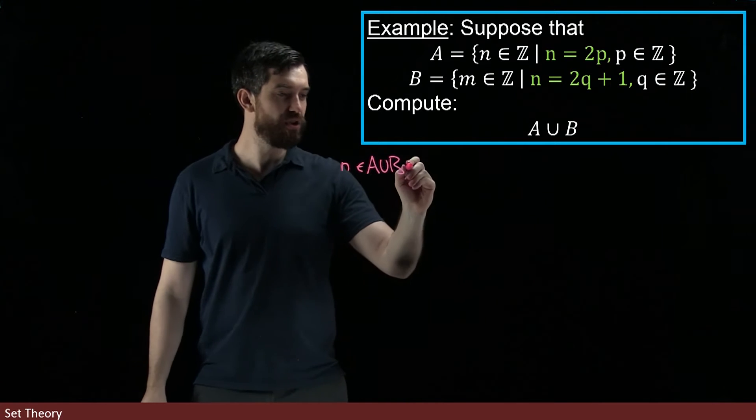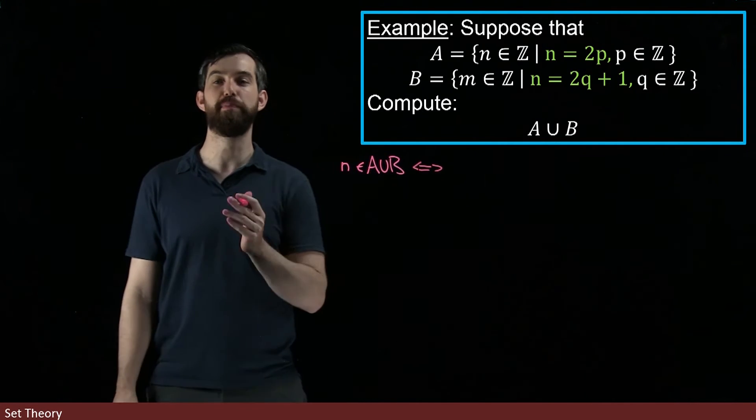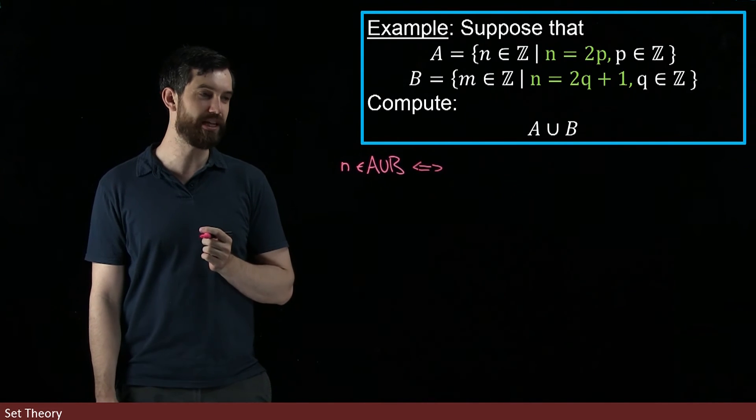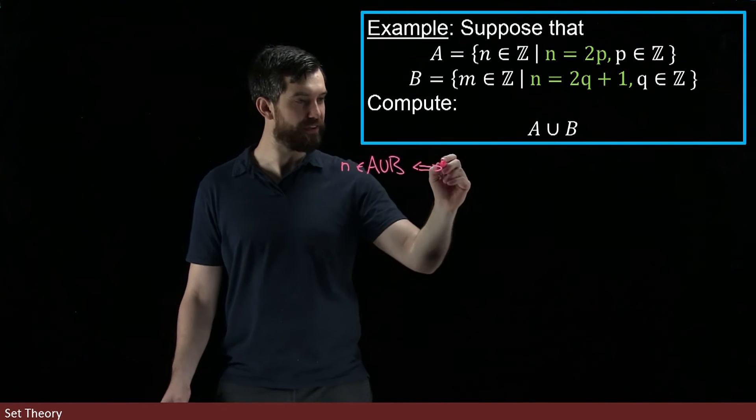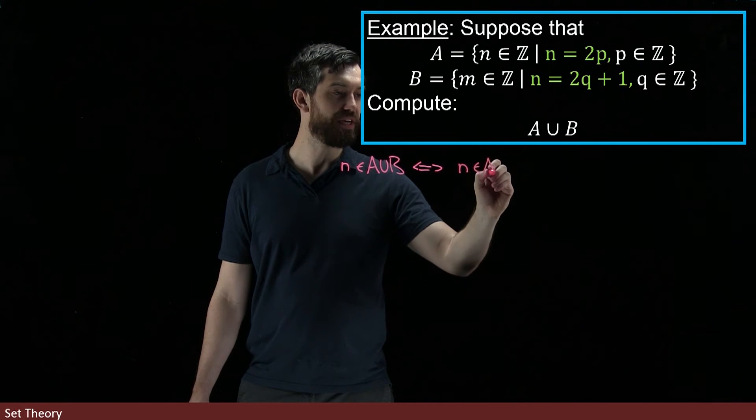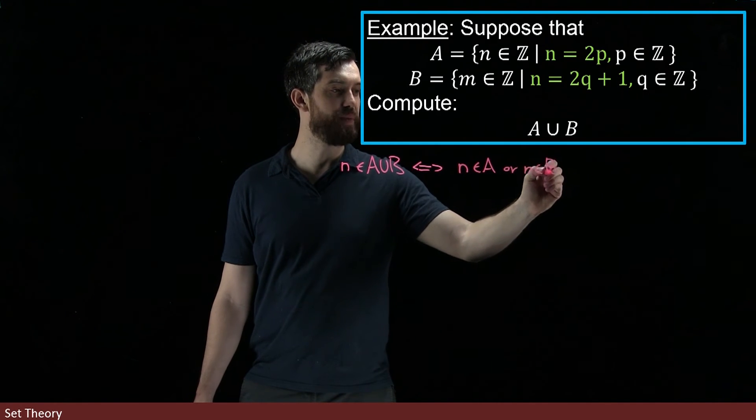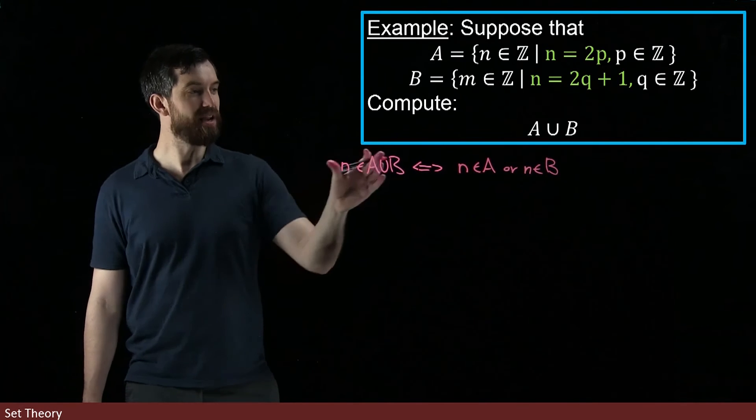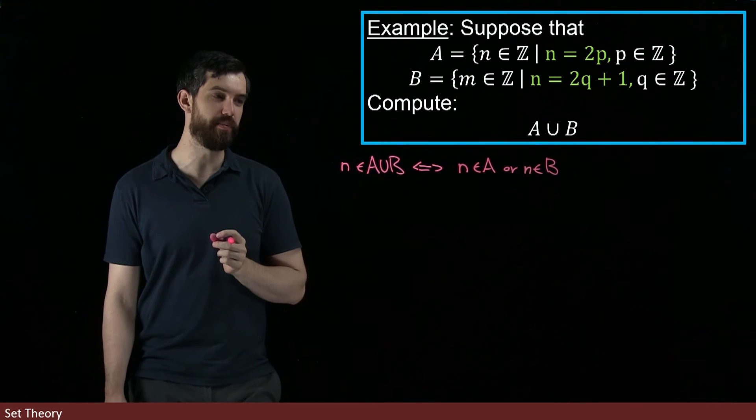So n in the A ∪ B, I'm going to write a biconditional arrow which means it goes both directions in my implications. So n is an element of A ∪ B is by definition the same thing as saying that n is an element of A or n is an element of B. I've taken my initial assumption and rewritten it based on what A ∪ B is.